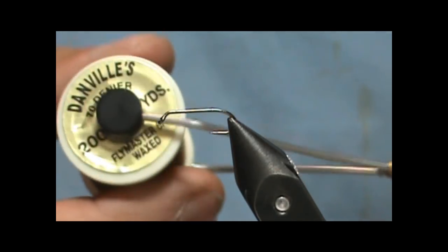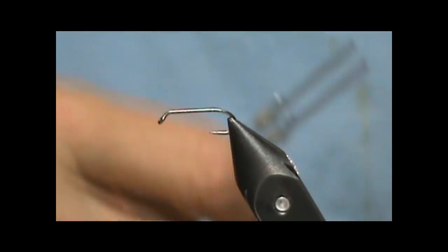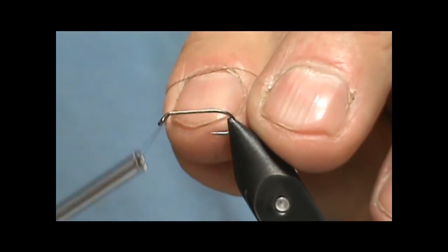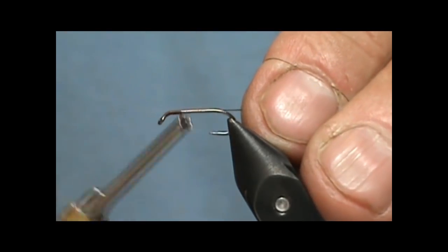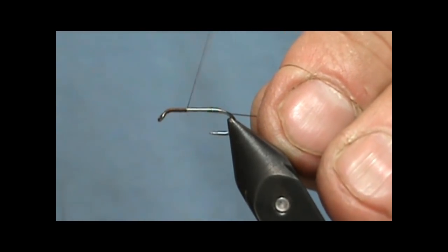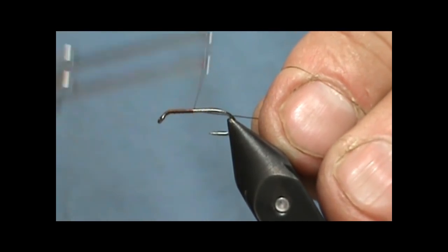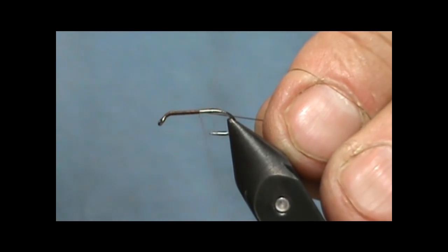This is 70 denier. I've been using the fancy Prince or the Prince nymph and I've been using it with a two fly rig. I was using it on the top and they were taking it, so that means that fly was in the middle water column.